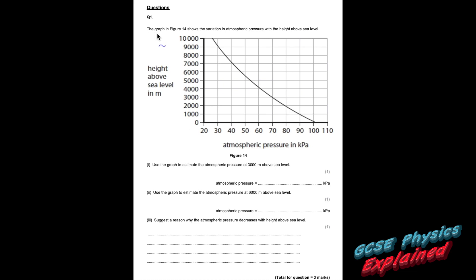Question 1. The graph in figure 14 shows the variation in atmospheric pressure with the height above sea level. Use the graph to estimate the atmospheric pressure at 3,000 metres above sea level. Let's just go to 3,000 metres and read off from the graph. That's 70 kilopascals.